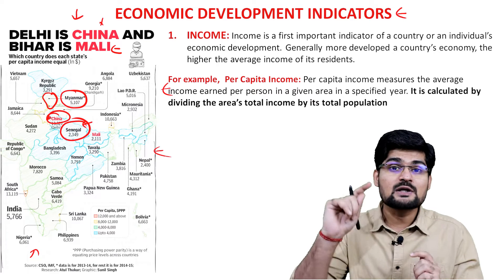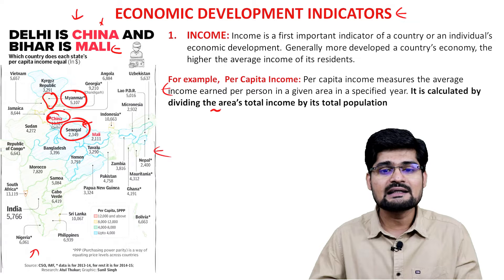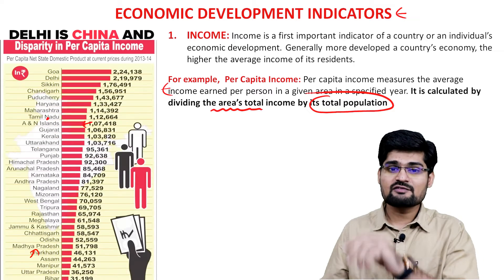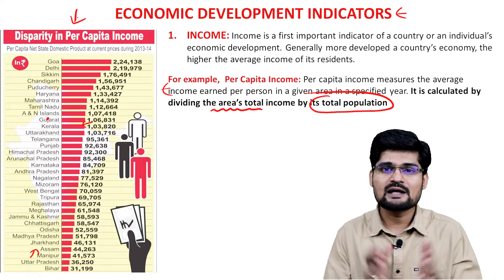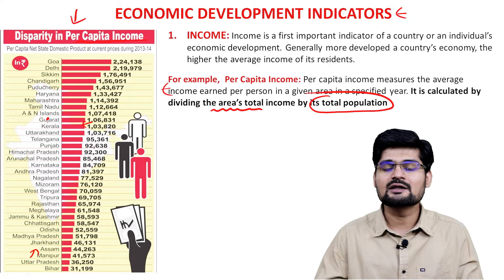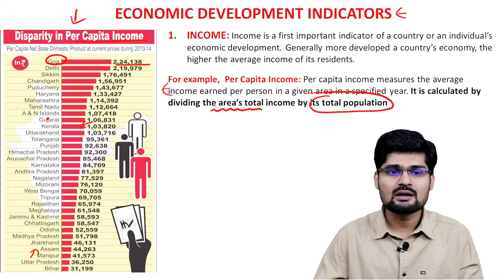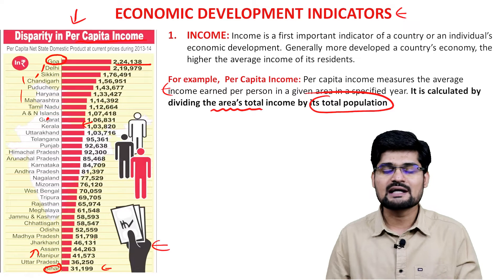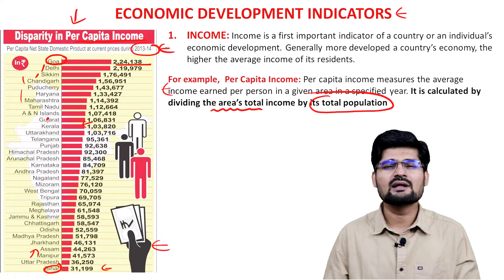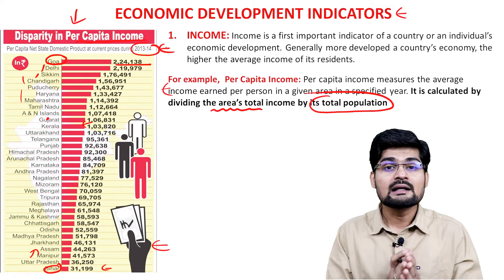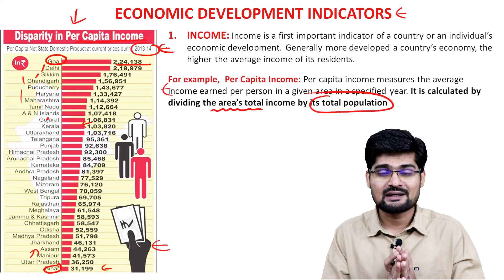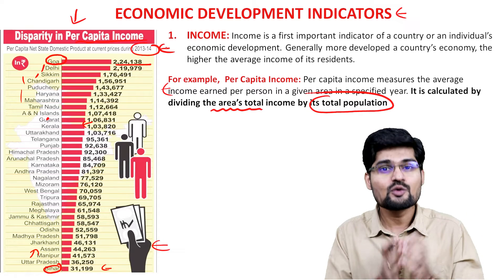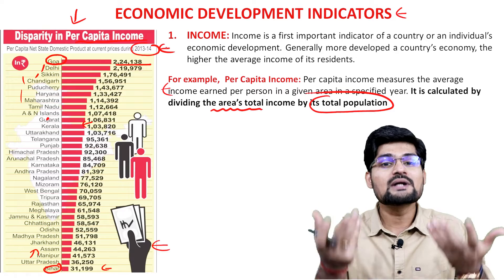Per capita income measures how much income per head is being generated. It is calculated by dividing the area's total income by its total population. Disparity in per capita income is significant: per capita income is highest in Goa, followed by Delhi, Sikkim, Chandigarh, and Puducherry, while Bihar ranks last, based on 2013–14 data. This indicates the disparity of economic development and why indicators are important.